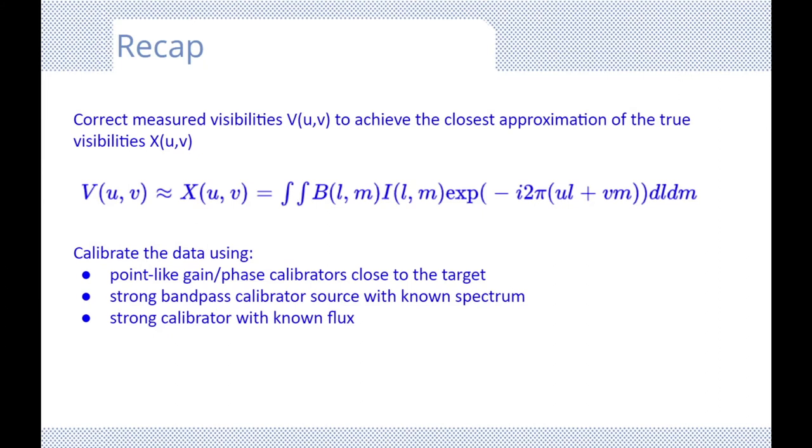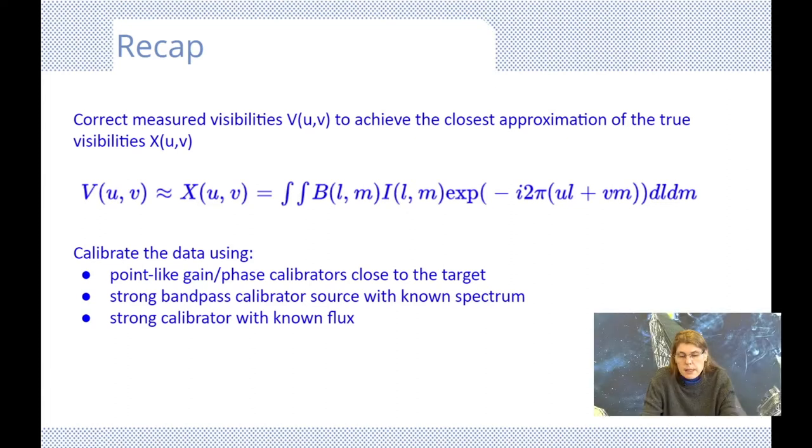From our knowledge of radio telescopes, we know that interferometer arrays measure the complex visibilities of the source, and the basic need for calibration is thus to correct the measured visibilities V to approximate as close as possible the true visibilities, here represented by X.